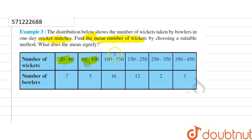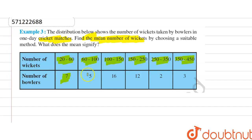The number of wickets intervals given are: 20 to 60, 60 to 100, 100 to 150, 150 to 250, 250 to 350, and 350 to 450. The number of bowlers corresponding to these intervals are 7, 5, 16, 12, 2, and 3.